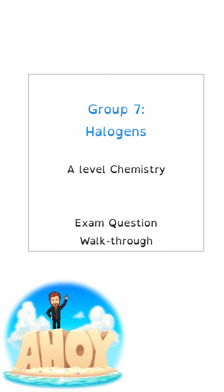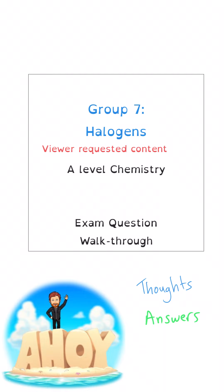Hello everybody and welcome back to the channel. I'm here with another A-level chemistry exam question walkthrough, this time looking at group seven, the halogens. In this walkthrough I'll be showing you my thoughts behind the question in blue, and the answers that are going to get you the marks will be in green.